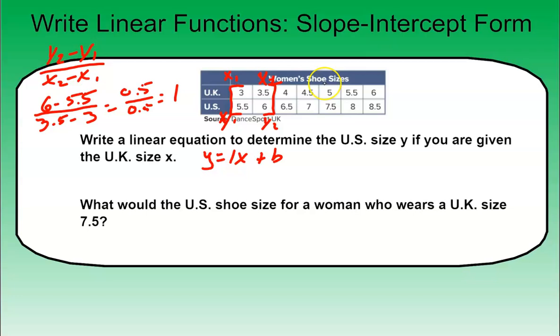And you can choose any points. I'm going to choose the first point that I have here. So if x is 3, so I'm going to put that off to the side here. So my y is going to be 5.5 equals 1 times 3 plus b. To get b by itself, I'm just going to subtract 3. And b is going to equal 2.5.